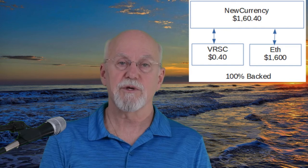Prices of fractional currencies like New Currency will fluctuate with their pools. Because no one sets the price, it is fully automated. Anyone can interact with New Currency anytime because the market is always open. This is called an automated market maker. There is always liquidity because the pool can never be empty — you can always add or remove Verus and Ethereum.